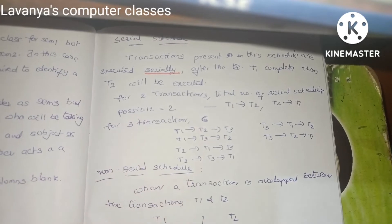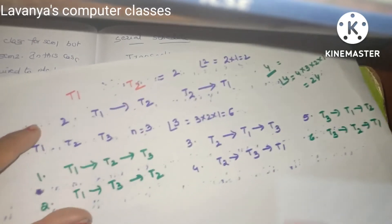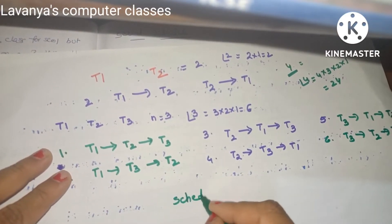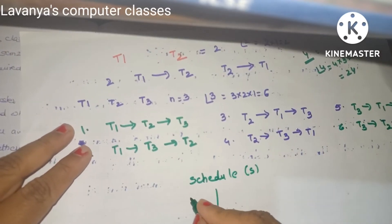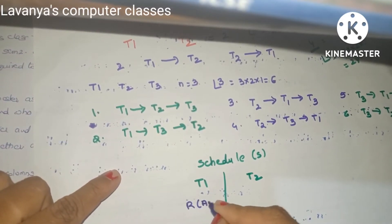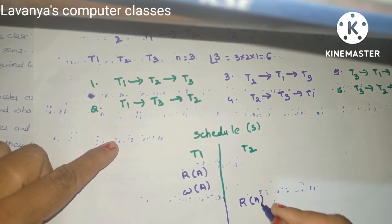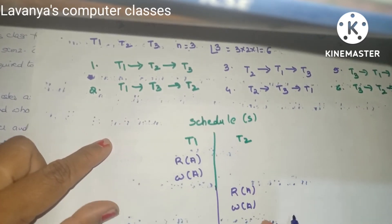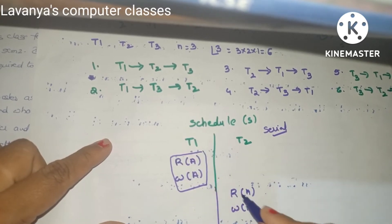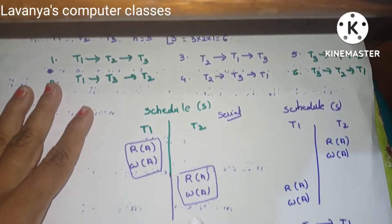Now for a serial schedule example: there are two transactions T1 and T2. A transaction is a set of actions. In schedule S1, T1 performs Read A and Write A, and once T1 is completed, T2 starts with Read A and Write A. This is T1 followed by T2 — a serial schedule.